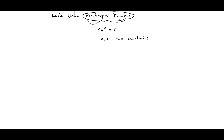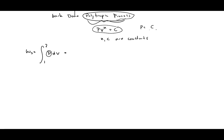We can calculate the boundary work — the boundary work is equal to the integral of P dV. This is also called pressure-volume work, or P dV work. What we want to do is solve the polytropic relation for pressure and substitute it in. So the pressure is equal to C divided by V to the N, which is equal to C multiplied by V to the negative N.